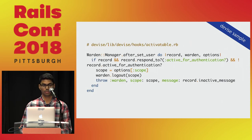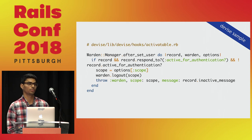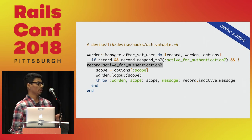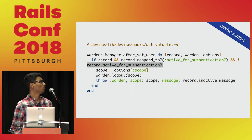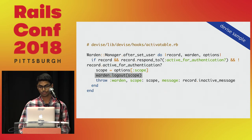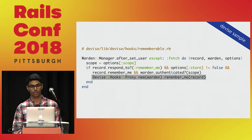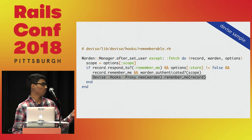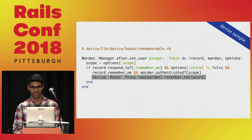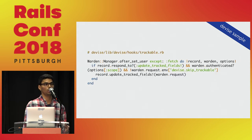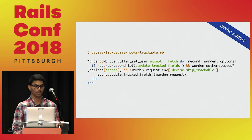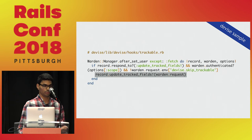For example, Devise uses after_set_user for email confirmation: when a user signs in, it calls active_for_authentication?, and if the user's email isn't confirmed yet it returns false, and we log the user out. Another use is for the remember-me feature: right after sign-in, we create a remember-me cookie by calling the remember_me method. We also have account tracking — columns like sign_in_ip and sign_in_count — so right after a user signs in, we call update_tracked_fields and pass the request so we can extract the IP from it.